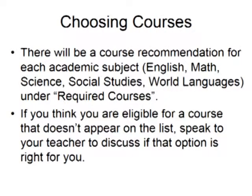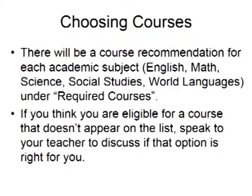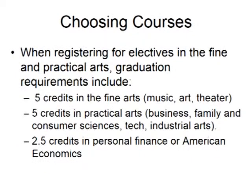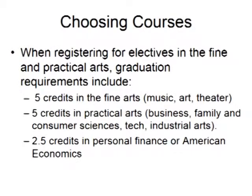There will be course recommendations for each academic subject area: English, Math, Science, Social Studies, and World Languages. That will be listed under Required Courses. If you think you're eligible for a course that doesn't appear on the list, speak to your teacher to discuss if that option is right for you. When registering for electives in the Fine and Practical Arts, graduation requirements include 5 credits in the Fine Arts, 5 credits in the Practical Arts, and 2.5 credits in Personal Finance or American Economics.